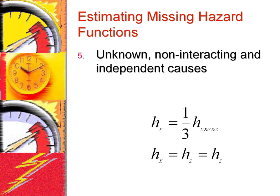It is also possible, though very rare, that we have an estimate for the combined effect of several non-interacting independent causes. In the absence of any other information about the relative impact of each cause, the hazard associated with each cause could be estimated to be equal.